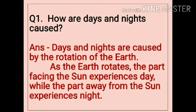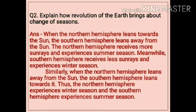Question number 1. How are days and nights caused? Answer: Days and nights are caused by the rotation of the earth. As the earth rotates, the part facing the sun experiences day, while the part away from the sun experiences night.